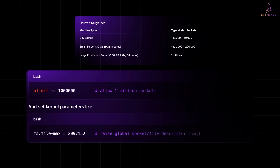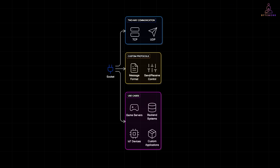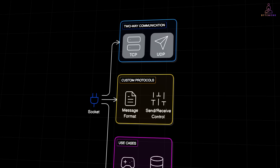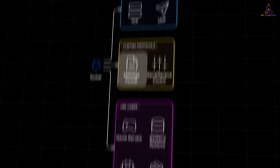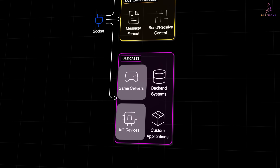Now we know how powerful sockets can be and how tools like ePoll and KQueue help scale them to massive levels. But here is a twist: not all sockets are built for the same purpose. There is a difference between the raw sockets we have been talking about and something you might have heard if you have ever built web apps — web sockets. Socket is the foundational building block: a low-level, two-way communication channel, usually over TCP or sometimes UDP. Think of it like setting up a direct phone line between two machines. You control how messages are sent, you define the format, and it's perfect for backend systems like game servers, IoT devices, anything custom.